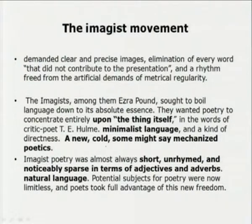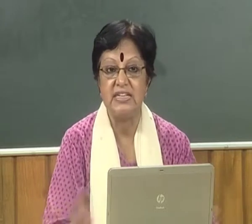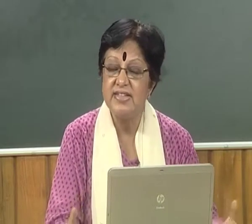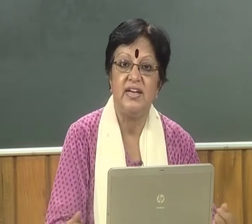Imagist poetry was almost always short, unrhymed, and noticeably sparse in terms of adjectives and adverbs — natural language. Even in the 10th century, the haiku poems of the Japanese experimented with this form, and Ezra Pound was influenced by this poetic technique and the 17-syllable poem. He talks about spareness, the understanding of space, the understanding of nature, the understanding of essence — in which unadorned words can be represented.